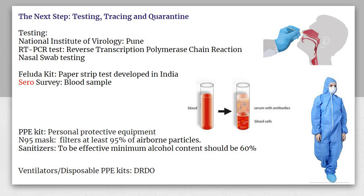Three things became very famous: first, the PPE kit; second, the N95 mask; third, sanitizer. PPE stands for Personal Protective Equipment. The N95 mask filters 95% of airborne particles, which is why it is called N95. Sanitizers were only effective if their alcohol content was 60% or higher.